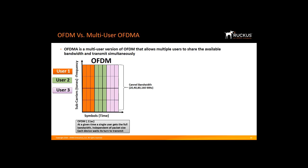OFDMA is a multi-user version of OFDM in that it allows multiple users to share the available bandwidth and transmit simultaneously. Under OFDM, a single user gets the entire bandwidth at any given time regardless of packet size — for a text message, this is like putting a small box in a big truck. Each AP can speak with only one device at a time, and they are client-centric with a randomized, contention-based approach — a free-to-send, first-come, first-served paradigm that is untenable for modern high-density deployments. Multiple users are separated in the time domain only: user 1 is transmitted first using the entire bandwidth, followed by user 2 and then user 3.